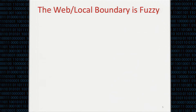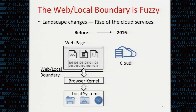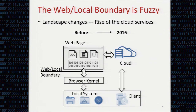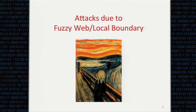Now let's revisit this web-local boundary. The original idea is that if a website wants to access the local system, it has to go through the interface provided by the browser kernel with the user's consent. However, in the current web, websites can access the local infrastructure via cloud APIs and cloud software. These cloud services have both a web interface and a direct local interface — the client-side software. Therefore, even if in the browser there is a well-defined boundary, the real boundary between the website and the local system is no longer clear. We can see this boundary is fuzzy.